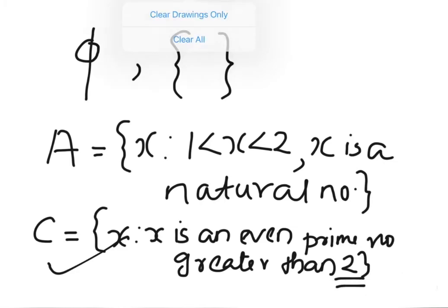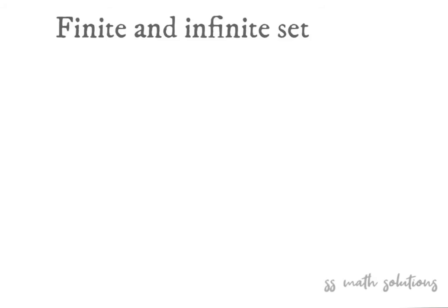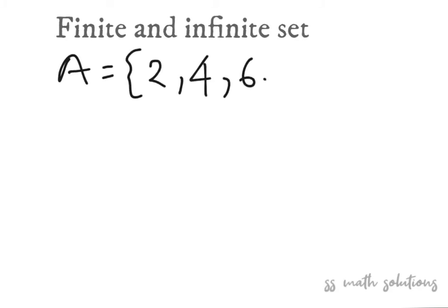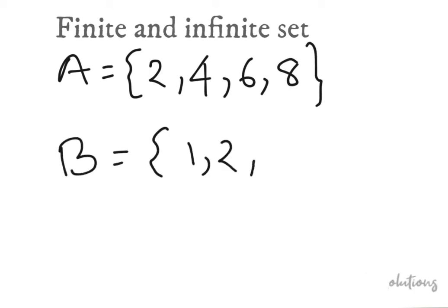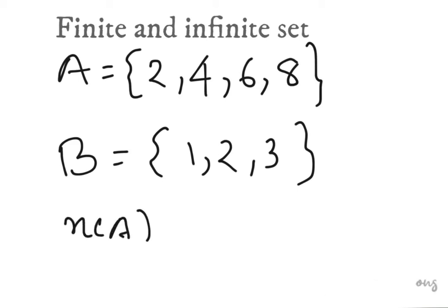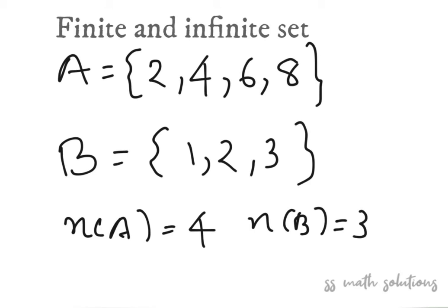The next one is finite and infinite sets. In the name itself we know what a finite set is — a set that contains a finite number of elements. For example, A = {2, 4, 6, 8} and B = {1, 2, 3}. We can count the elements: n(A) = 4 and n(B) = 3. Since we can count them, these are finite sets.